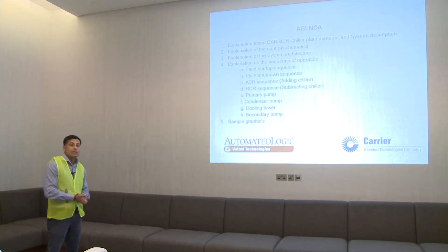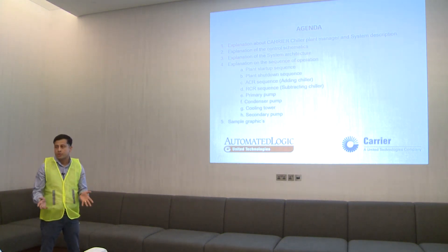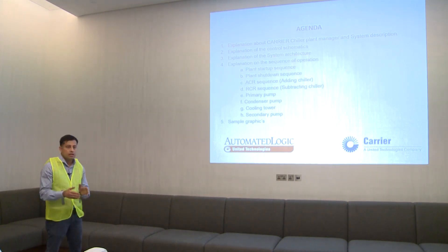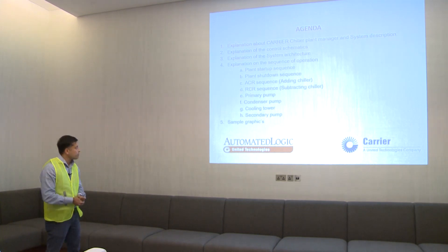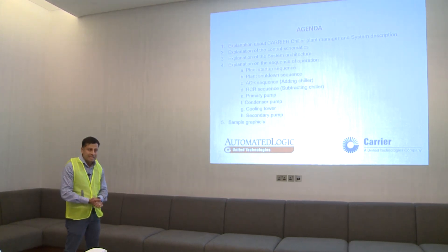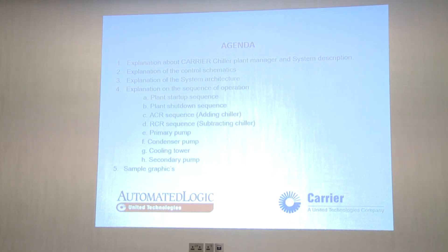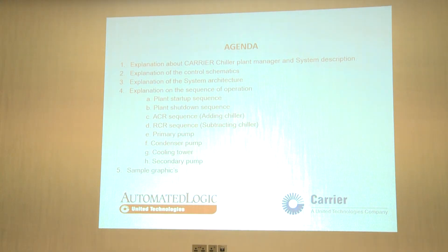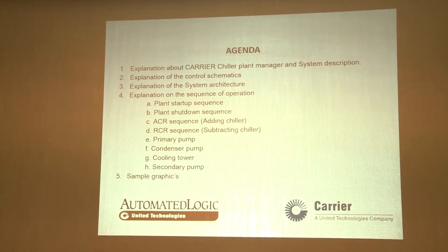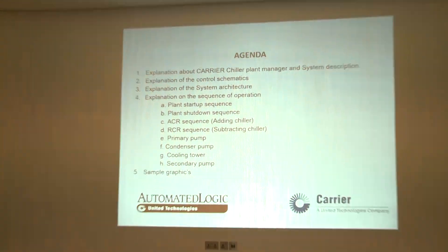The fourth section covers the sequence of operation — how the system will work, including the chilled water loop, condenser loop, and cooling towers, how equipment will be added or subtracted, what parameters you can change, and what to consider when changing them. The fifth section covers the graphics — how we have designed and customized them as per your requirement, what features are available, how to control it, and how to effectively utilize the system.